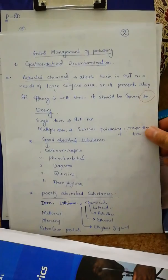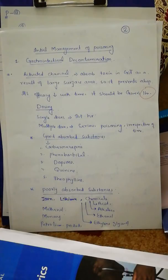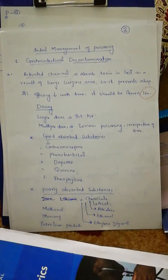Before going into each poisoning in detail, I am going to tell you some methods of management which we must know. In the initial management of poisoning, there are several methods. Number one is gastrointestinal decontamination — to decontaminate the GI tract and prevent the toxin from absorption. The first method here is activated charcoal. Activated charcoal absorbs toxins in the GI tract due to its large surface area, preventing absorption of toxins. The efficacy decreases with time; it should be given within one hour of poisoning.